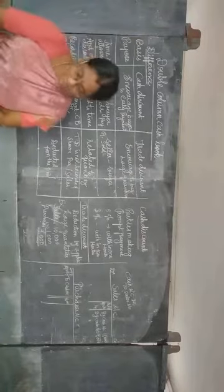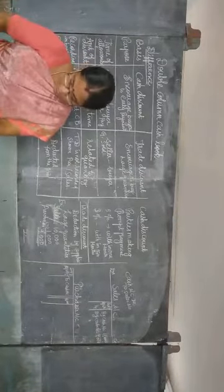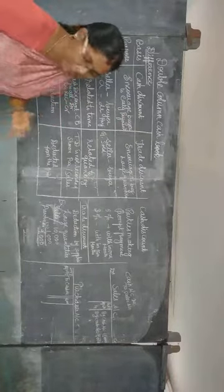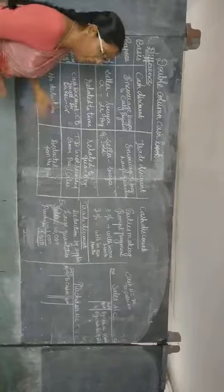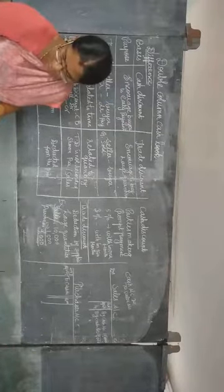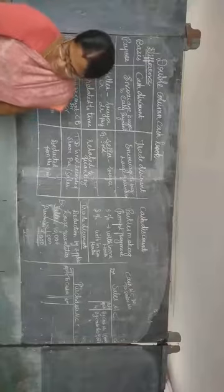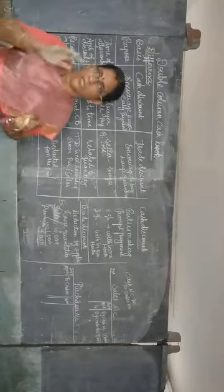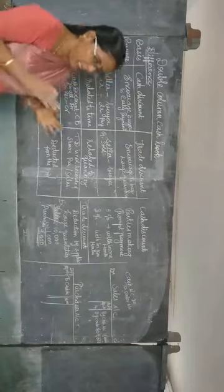Now let us move on to double column cash book. It is nothing but like the same single column cash book. The double column cash book is a cash book with cash and discount columns. How to write the format — like the same single column cash book, we are going to write the format. As there are two columns — that is, discount column and also cash column — on both debit side and credit side, the cash book is known as double column cash book. Both sides we are going to write cash column and discount column.